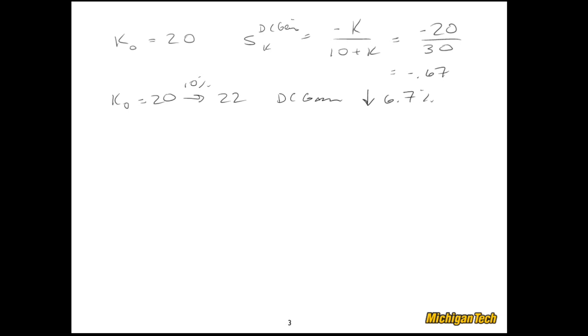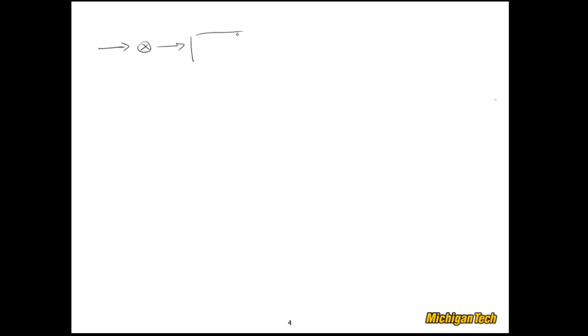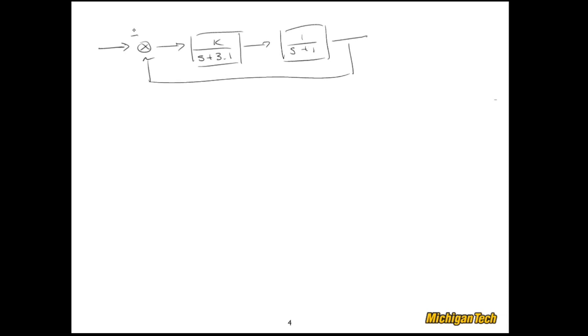Let's do one more example, something more interesting than DC gain. Here's a reference input with a controller k over (s plus 3.1), a simple plant 1 over (s plus 1), and unity feedback.